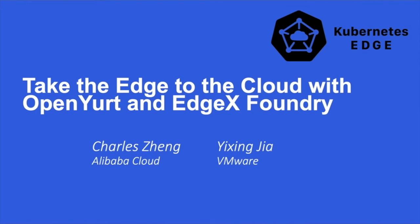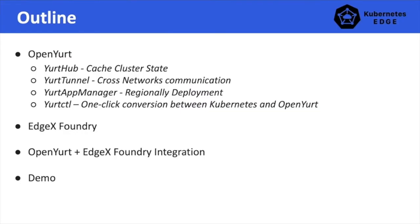This is a cooperation project between Alibaba Cloud and VMware. This talk will be divided into four sections. First, I will introduce the four main challenges of applying Kubernetes to edge computing environments and how OpenYurt addresses them. Then Yixing will provide the necessary backgrounds of EdgeX Foundry and how we combine OpenYurt with EdgeX Foundry. Finally, we will wrap up the talk with a demo.